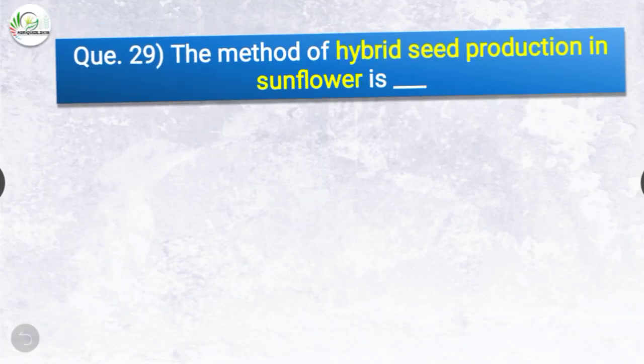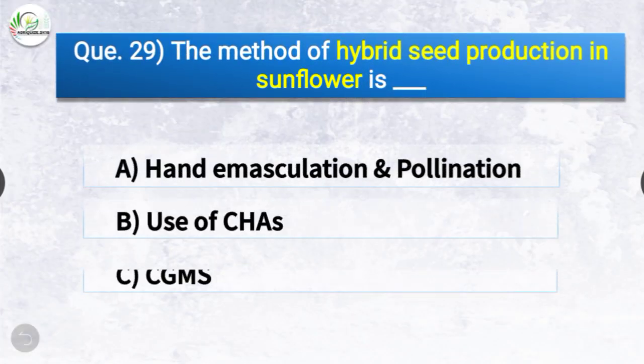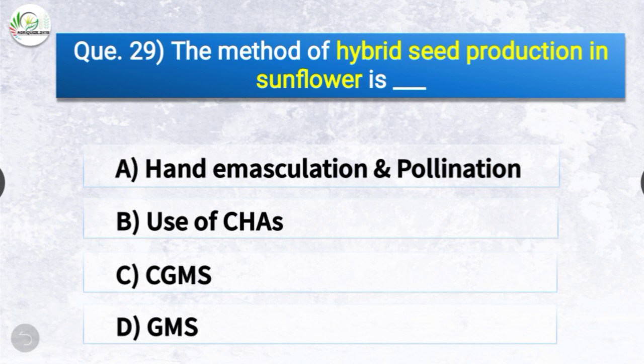Question number twenty-nine: The method of hybrid seed production in sunflower is — the options are hand emasculation and pollination, use of CHAs, CGMS, or GMS. The correct answer is option C — CGMS. The method of hybrid seed production in sunflower is CGMS (cytoplasmic genetic male sterility).